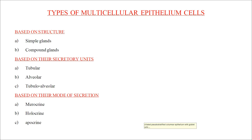Types of multicellular glandular epithelial cells: based on structure, they are classified into simple and compound glandular epithelial cells. Based on secretory units, they are classified into tubular, alveolar, and tubulo-alveolar. Based on mode of secretion, they are classified into merocrine, holocrine, and apocrine.